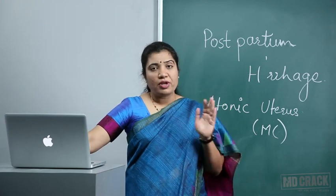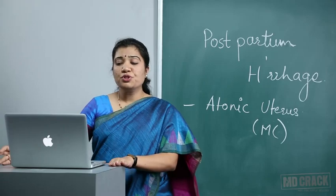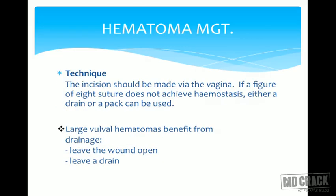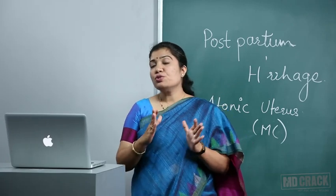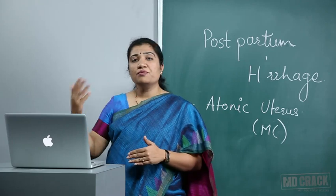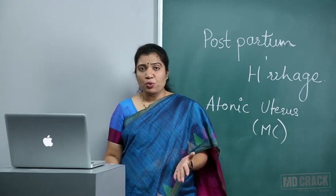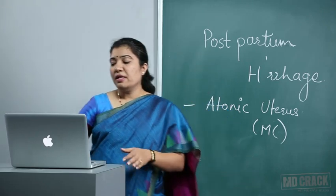If the haematoma is increasing in size or affecting the patient's general condition with tachycardia, explore it under good light in theatre with anaesthesia and blood transfusion available. Haematomas more than five centimetres require surgical intervention: open the episiotomy wound or make a vaginal incision, explore the cavity, scoop out the clots, identify the bleeding vessel, and place a figure-of-eight suture. If detected within 24 hours of episiotomy suturing, the wound can be resutured after haemostasis. If detected after 24 to 48 hours, infection may have set in — leave it open with a drain and allow healing by secondary intention.